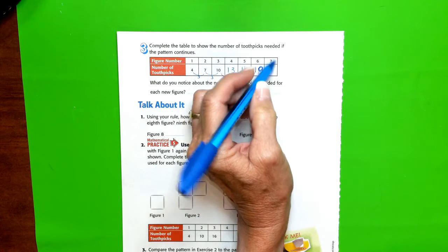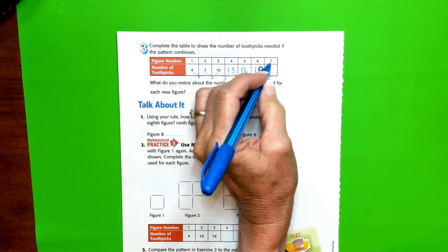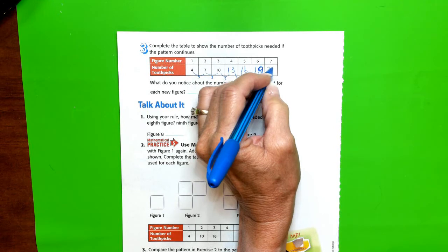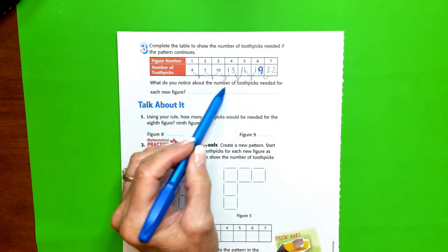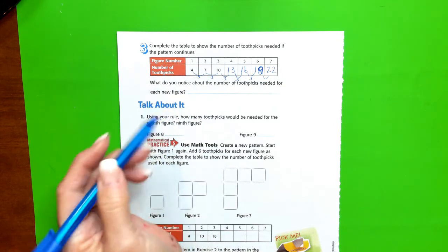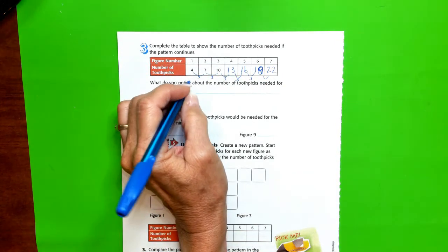And for our last figure, 3 more: 19 plus 3 is 22. So what did we notice about the number of toothpicks needed for each new figure? Well, it increased by 3.